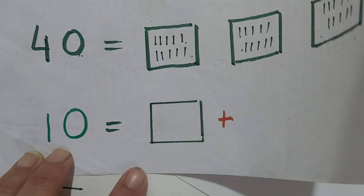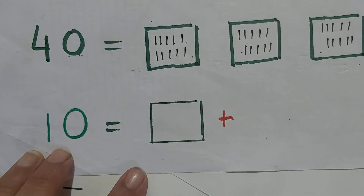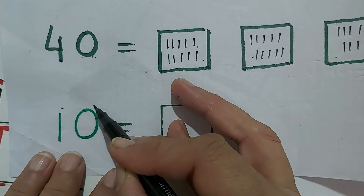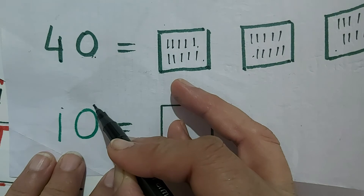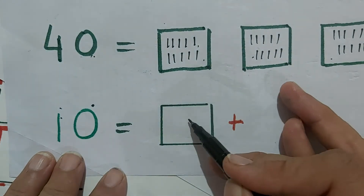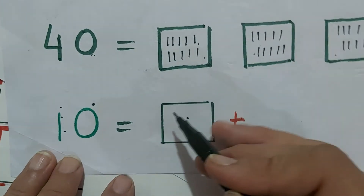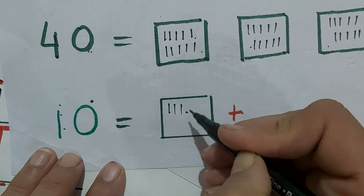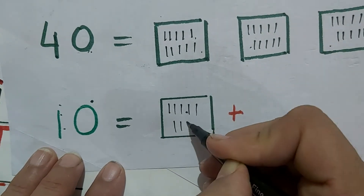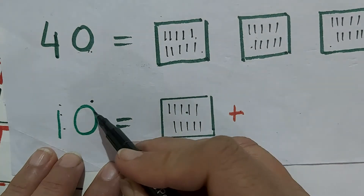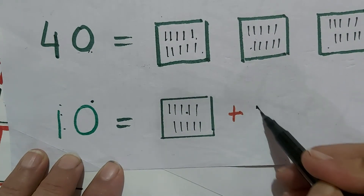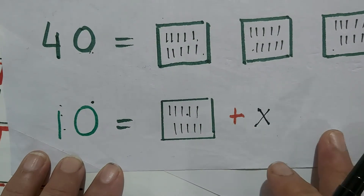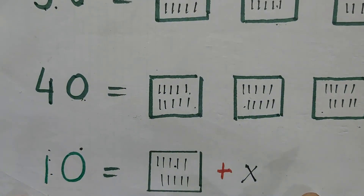See here, again 10. How many tens? 1 ten. How many ones? 0. Again 0. So how many squares will we draw? 1 only. And inside the square, how many lines will we draw? 10 lines. And at the place of ones, we will draw nothing — 0, because 0 has no value.